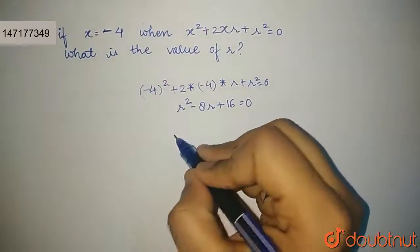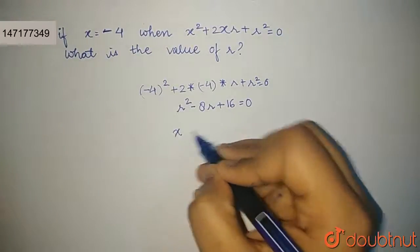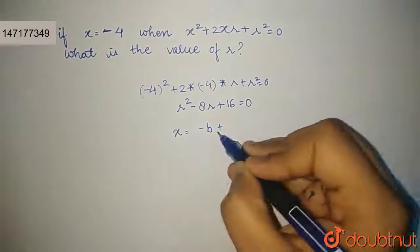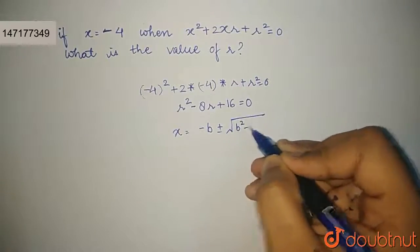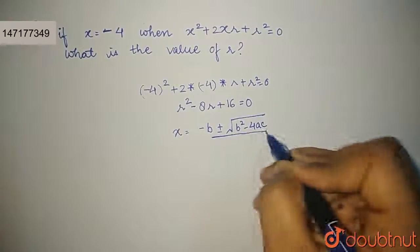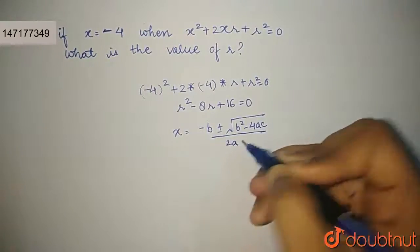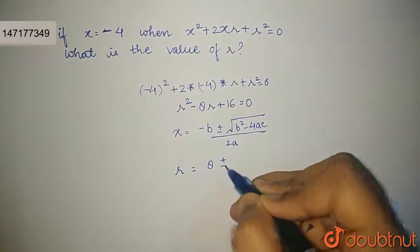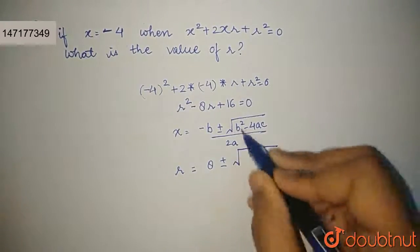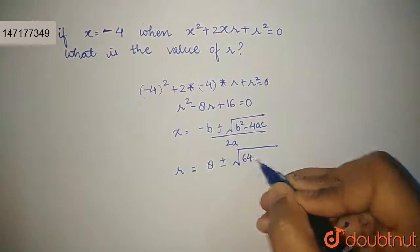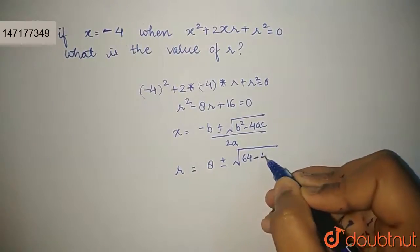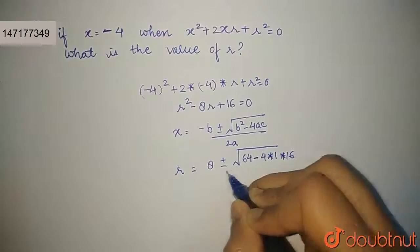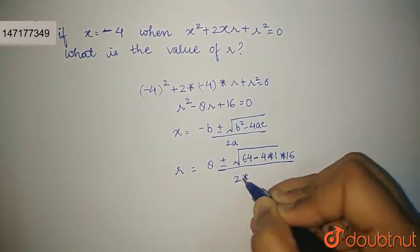Now, using the formula for roots, where x is equal to minus b plus minus root of b squared minus 4ac upon 2a, so we can get the value of r as 8 plus minus root of 64 minus 4 into 1 into 16 upon 2 into 1.